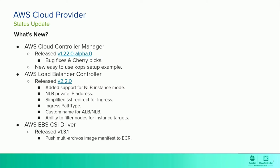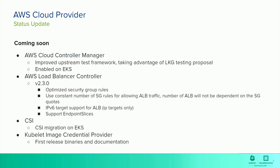The EBS CSI Driver recently released version 1.3.1 with multi-arch OS image manifests in ECR — take a look at that as well if you're interested. What's coming soon? For the Cloud Controller Manager, we're working on an improved upstream test framework — we'll be taking advantage of the last known good testing proposal. You can also look forward to the Cloud Controller Manager being enabled on EKS in a version soon. The AWS Load Balancer Controller has a release coming out pretty soon with a bunch of features loaded into it.